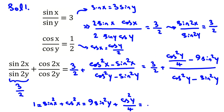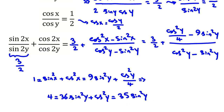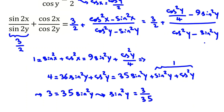Multiplying both sides by 4 gives 36 sine squared y plus cosine squared y equals 4. Since sine squared y plus cosine squared y equals 1, we can write 35 sine squared y plus 1 equals 4. Subtracting 1 from both sides: 3 equals 35 sine squared y. So sine squared y equals 3 over 35.